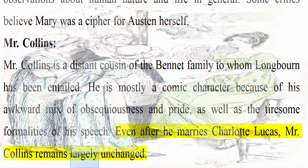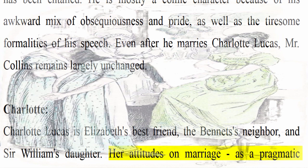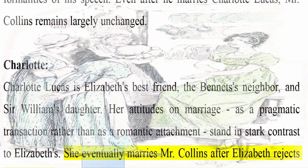Charlotte: Charlotte Lucas is Elizabeth's best friend, the Bennets' neighbor, and Sir William's daughter. Her attitudes on marriage, as a pragmatic transaction rather than as a romantic attachment, stand in stark contrast to Elizabeth's. She eventually marries Mr. Collins after Elizabeth rejects his proposal.